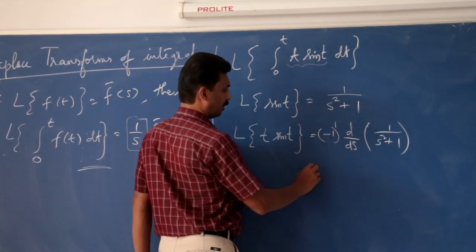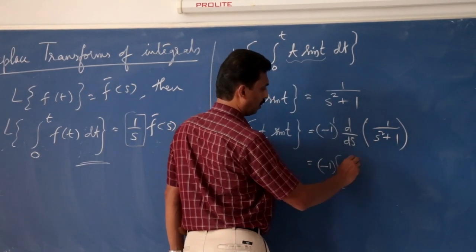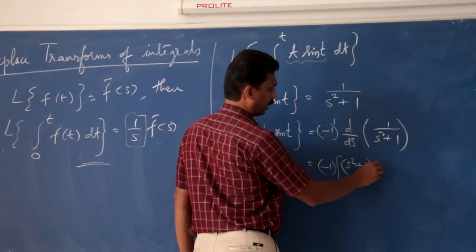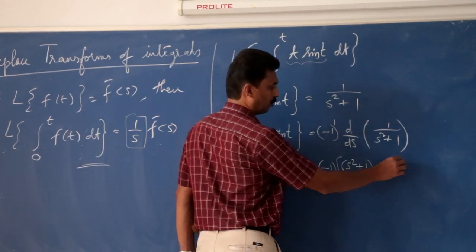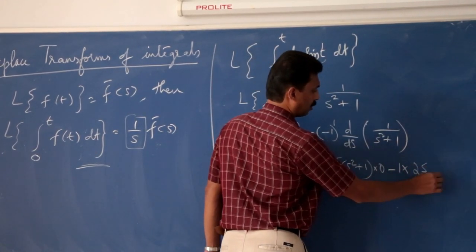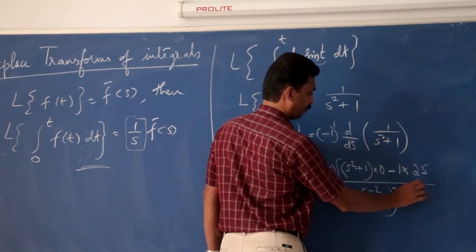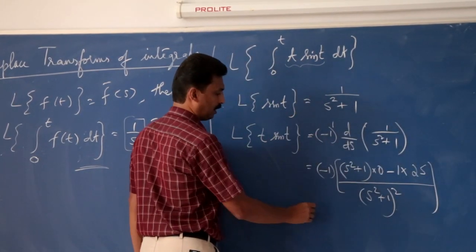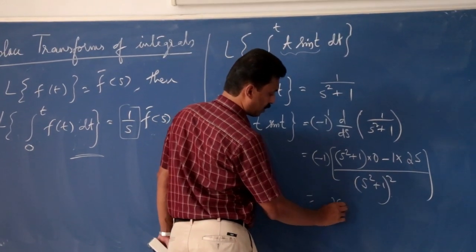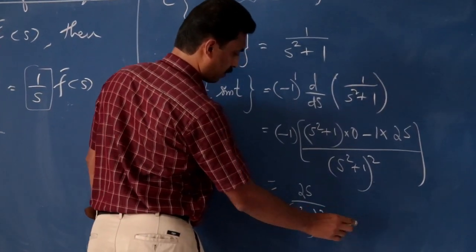So this equals −1 times the derivative of 1/(s² + 1). Applying the quotient rule: denominator times derivative of numerator minus numerator times derivative of denominator, all divided by the square of the denominator. After simplification, we get 2s divided by (s² + 1)².